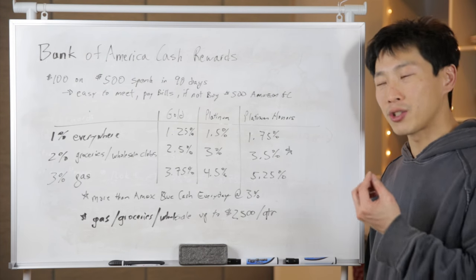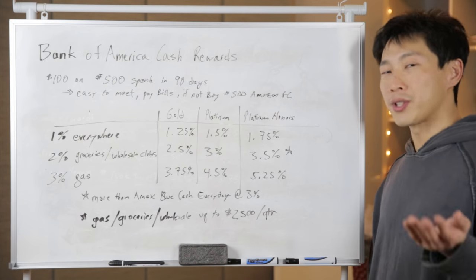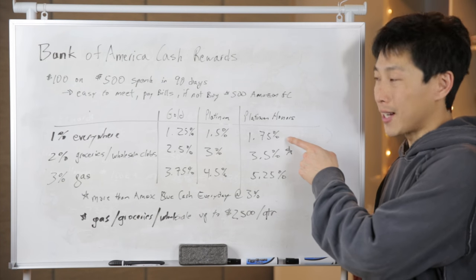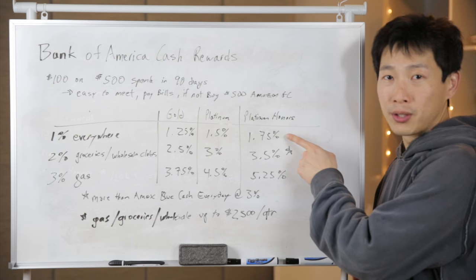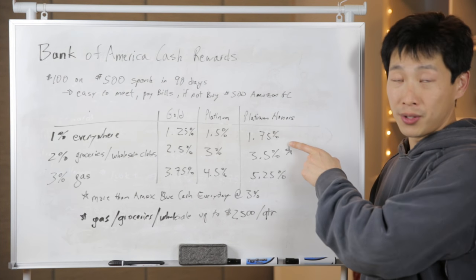You'll note that Citi double cash back actually gets you 2% on everything. 1% when you buy something, 1% when you pay for it. Now 1.75 isn't as good, so this is pretty useless because it's 0.25% less than the Citi double if you have that card.